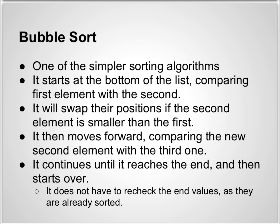Bubble Sort is one of the simpler sorting algorithms. It starts at the bottom of the list, comparing the first element with the second. It might seem strange as to why we choose the bottom of the list, however, if you think of it like the name bubble, it can be compared to a soda, where carbonation bubbles from the bottom to the top. Bubble Sort performs in a similar manner.